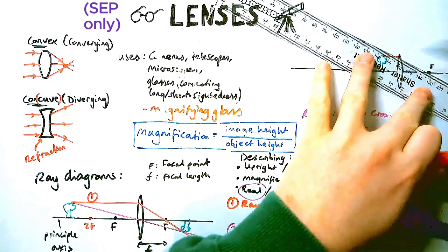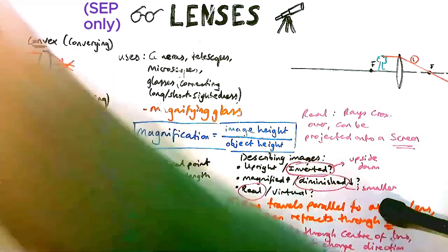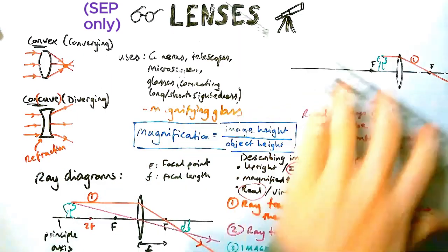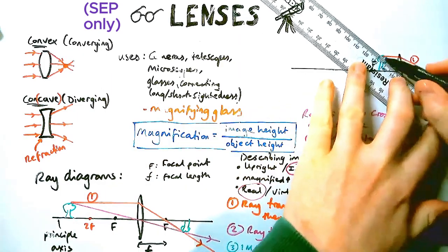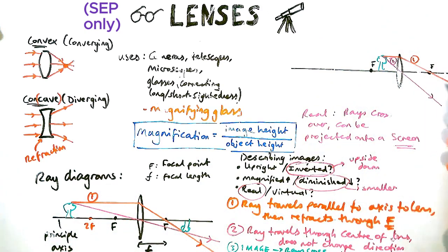So let's draw in our lines. Line number one in red goes parallel, then through F. Line number two goes straight through the centre of the lens. Uh-oh, we have a big problem. The lines are not going to cross over. So what do we do?